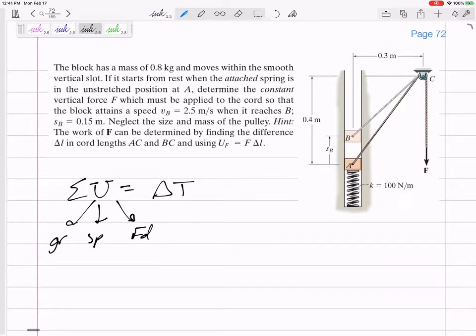Okay, so here we've got a block that has a mass of 0.8 kilograms. It moves within the smooth vertical slot. It starts from rest when the attached spring, sometimes these springs are attached to the block, sometimes the block goes free from the spring. If it starts from rest when the attached spring is in the unstretched position at A, determine the constant vertical force which must be applied to the cord so that the block attains a speed of 2.5 meters per second when it reaches B.